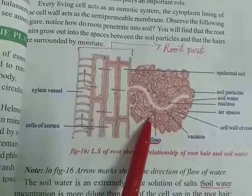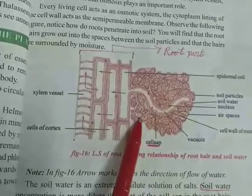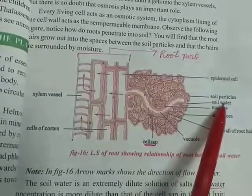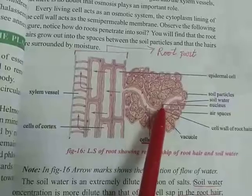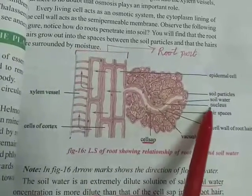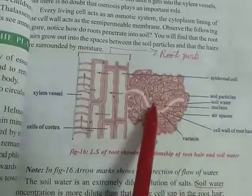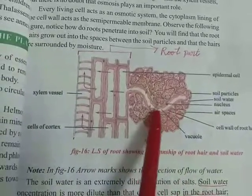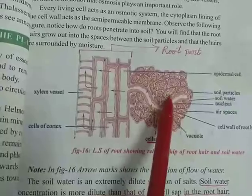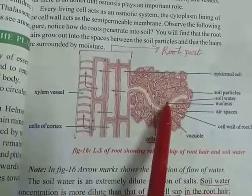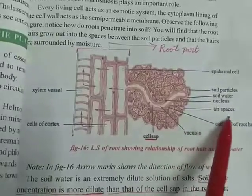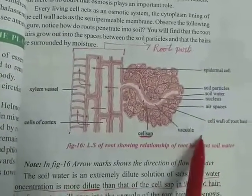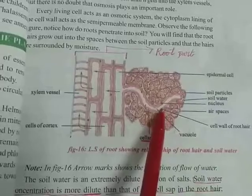If you observe the root part and root hair part, both are embedded in soil particles. Soil particles contain soil water. Root hairs contain a nucleus, as plant cells contain a nucleus. Root hairs also contain cell sap. In the soil, some spaces called air spaces can be seen.